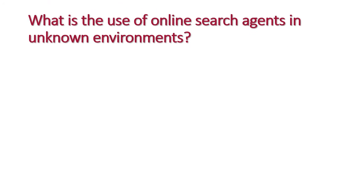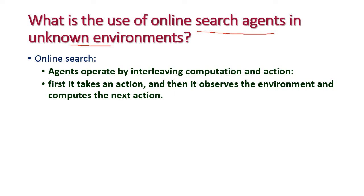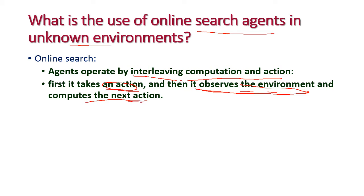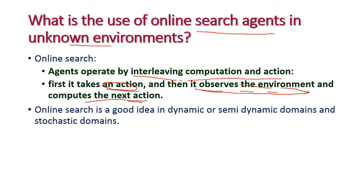The next question is: what is the use of online search agents in an unknown environment? In online search, the agent operates by interleaving computation and actions. First it takes an action, then it observes the environment, and then computes the next action. Online search is a good idea in dynamic, semi-dynamic, or stochastic (non-deterministic) domains.